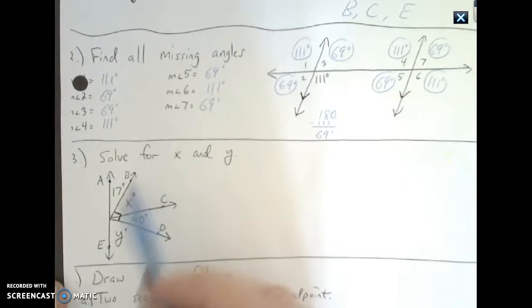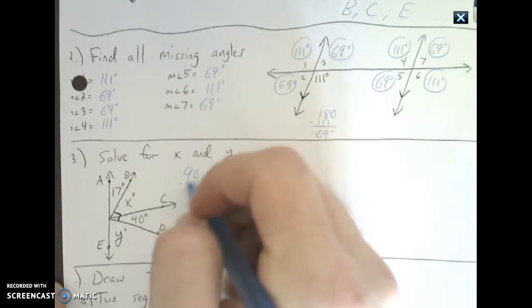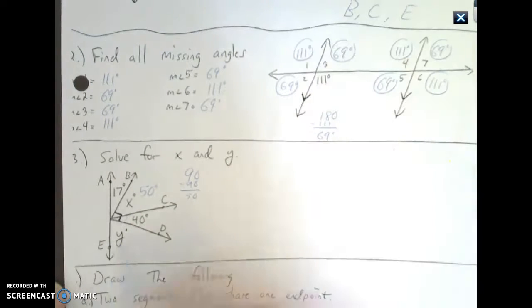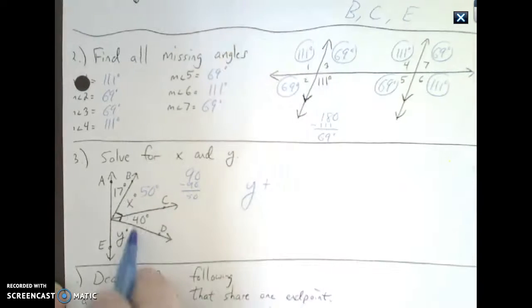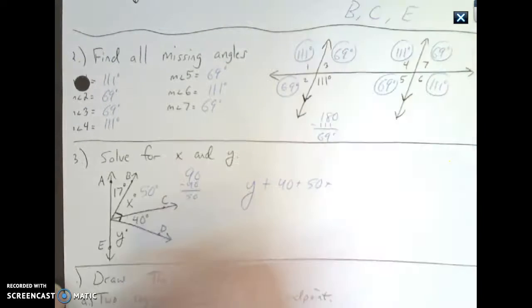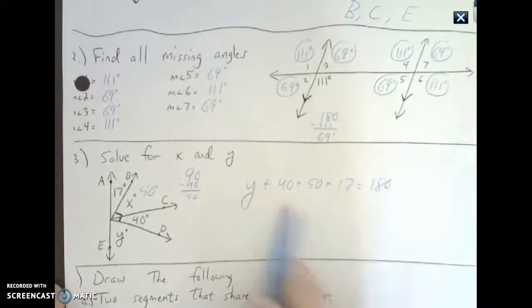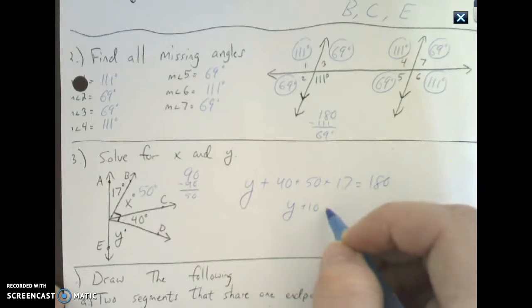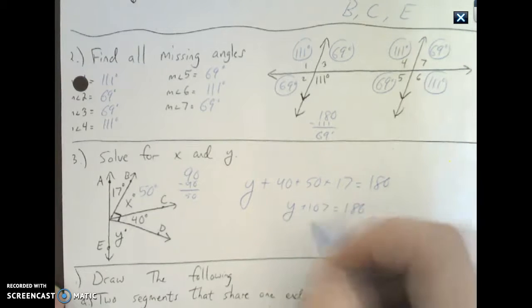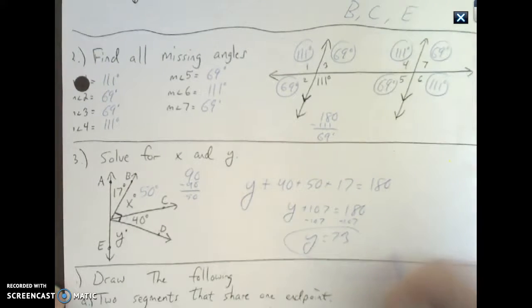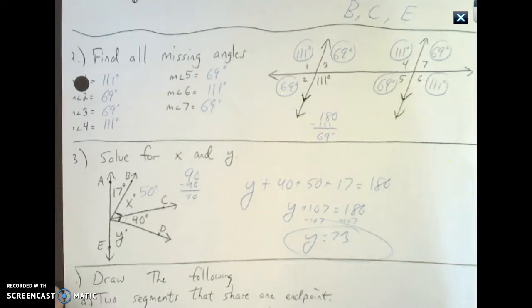Solve for y. This is a right angle, which means this is 90. 90 minus 40 gives you 50. So find y. I can say y plus 40 plus 50 plus 17 equals 180 degrees. Add these together, subtract 107, 73. You got x and y done.